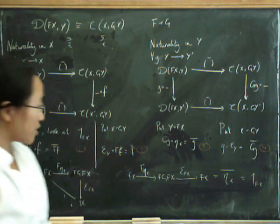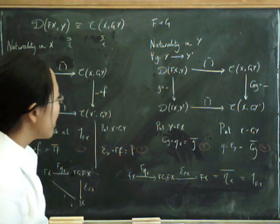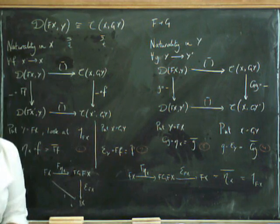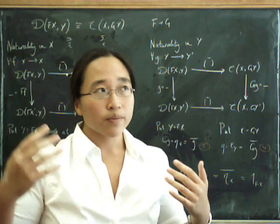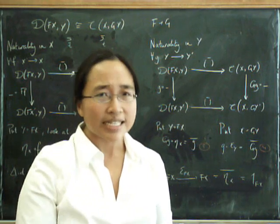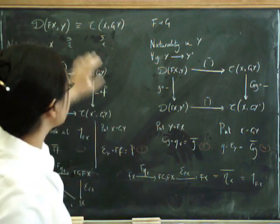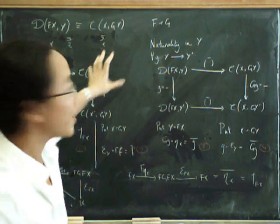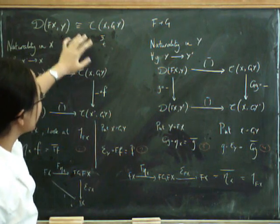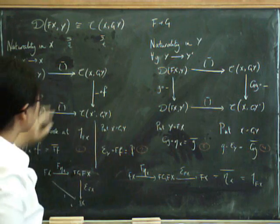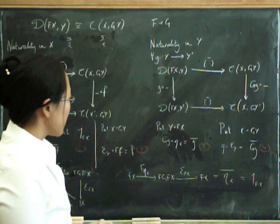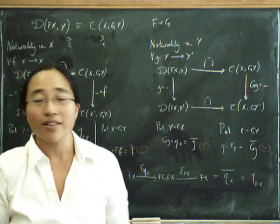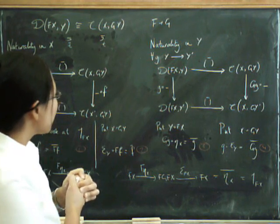So what have we done? We've constructed natural transformations eta and epsilon, and showed that they satisfy the triangle identities using these naturality squares. So to do it the other way around, we'd have to start with eta and epsilon satisfying the triangle identities and construct a natural isomorphism like this. Now, I'm hoping that you can see how to do it, because I don't think I can do it in the remaining time. You construct this natural isomorphism by doing this entire process backwards and prove that these two things are natural using all these things backwards. And I do believe, is there anything else I should say at this point? I think that's all I was going to say today. So there it is.